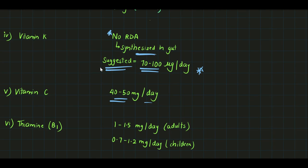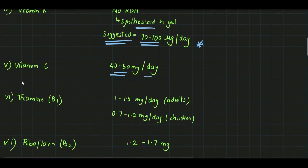Suggested RDA for vitamin K is 70 to 100 micrograms per day. For vitamin C, it is 40 to 50 milligrams per day.